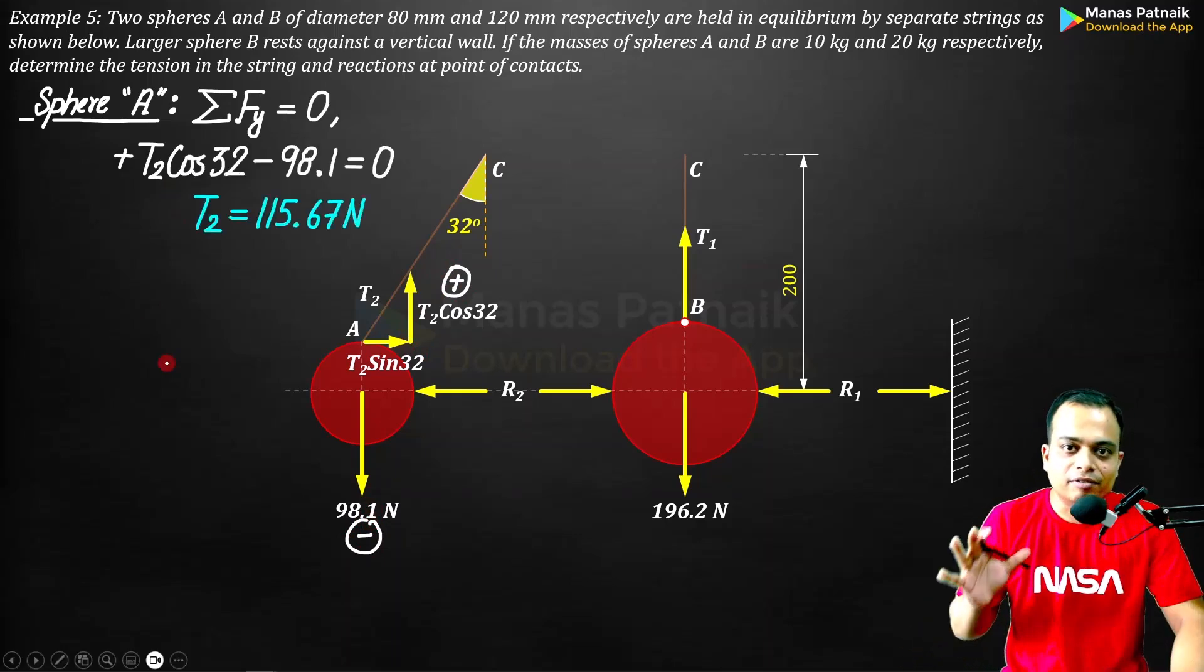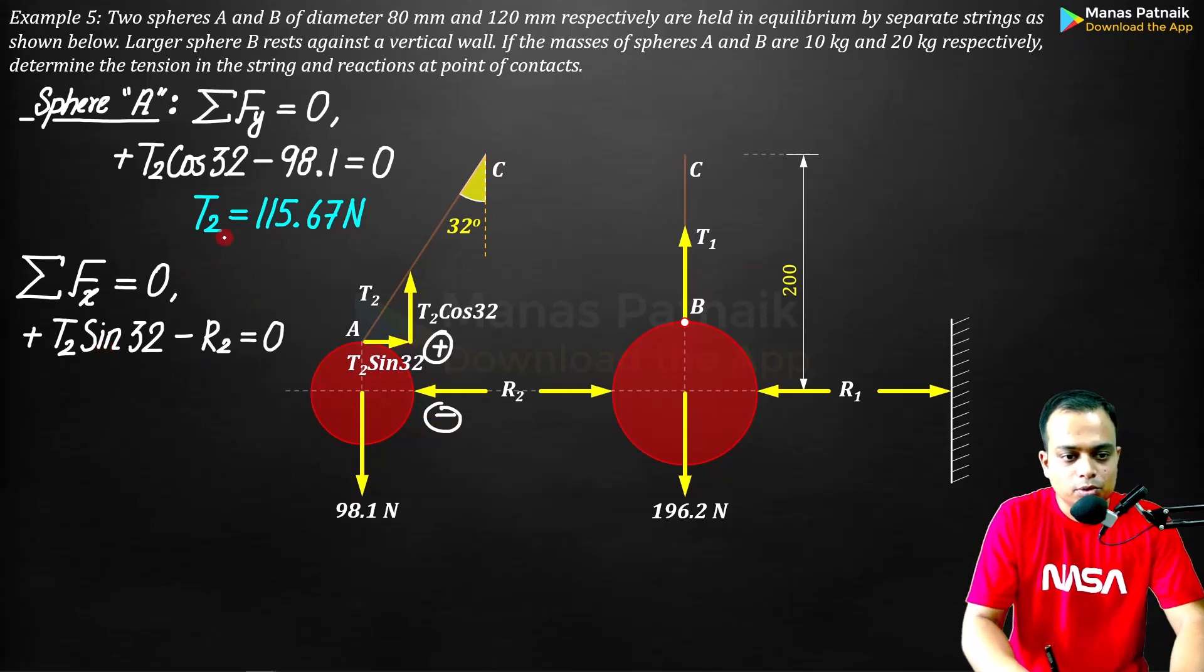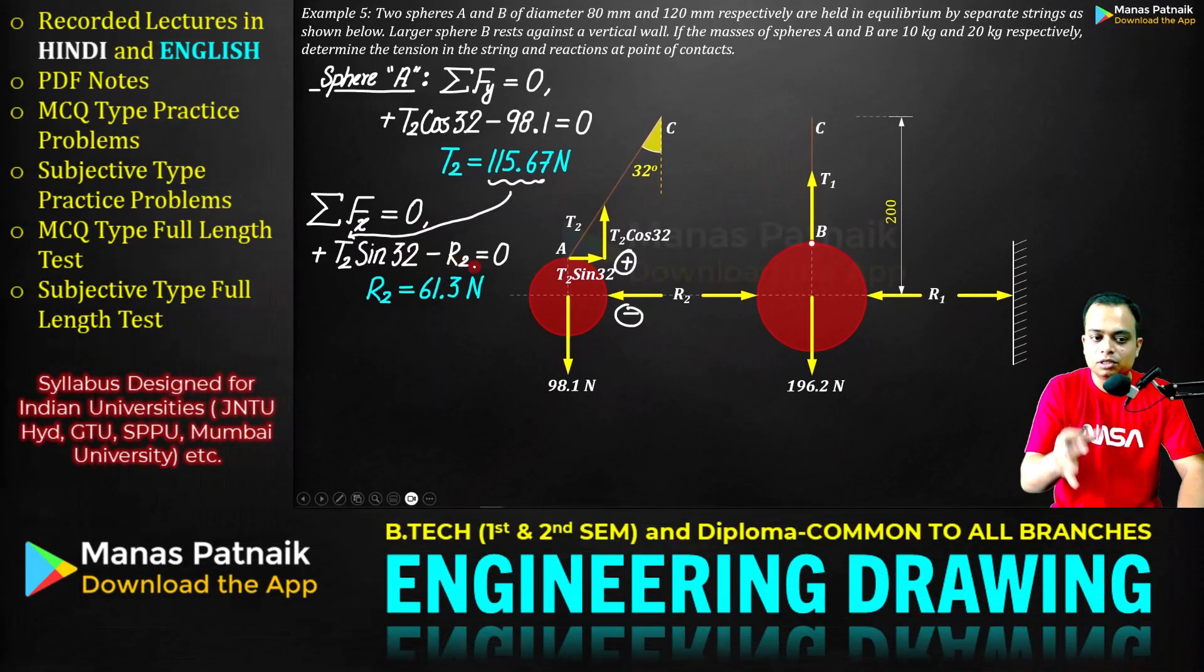Now let's go for summation Fx equals zero. T2 sin 32 is to the right, that's positive. R2 is to the left, that's negative. T2 sin 32 minus R2 equals zero. Plug in the value of T2 as 115.67, solve for R2, you get 61.3 Newtons.